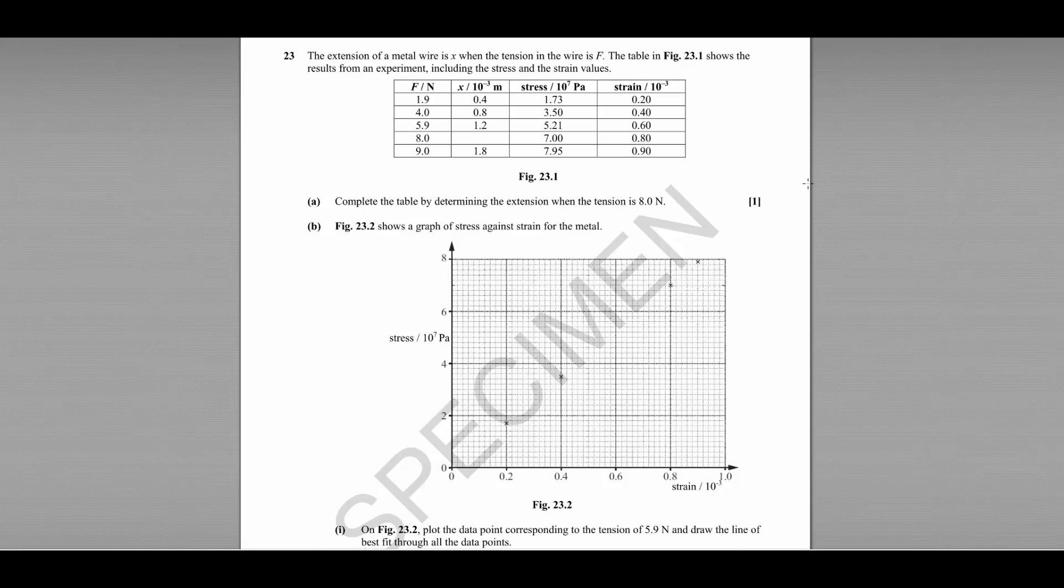Question 23 gives us a results table and graph for an experiment measuring the stress and strain in a metal wire. The first part, part A, asks us to complete the table by determining the extension when the tension is 8 newtons, so this missing value here.